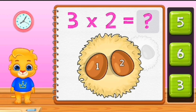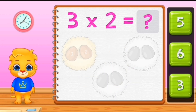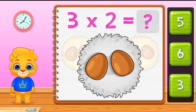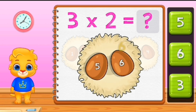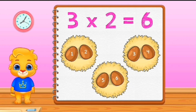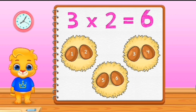One, two, three, four, five, six. Six. Three times two equals six.